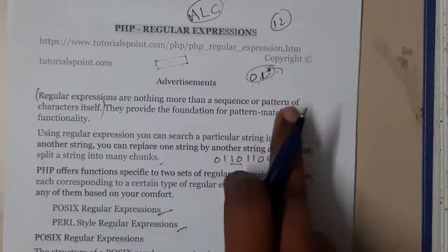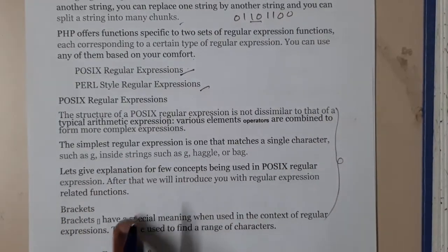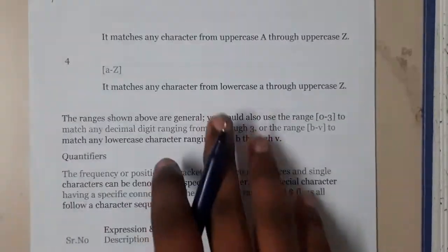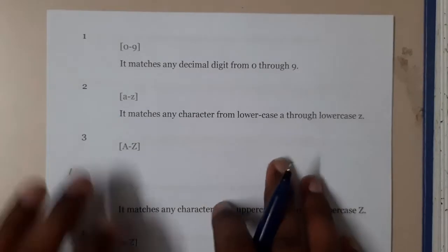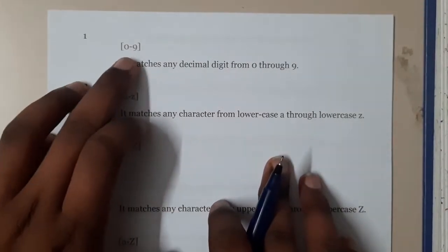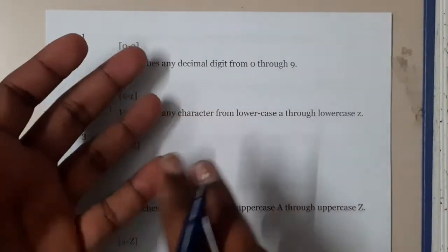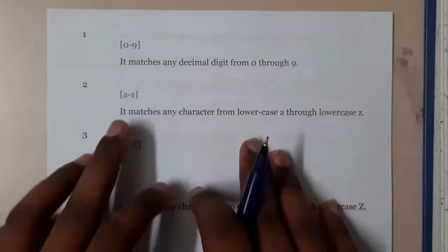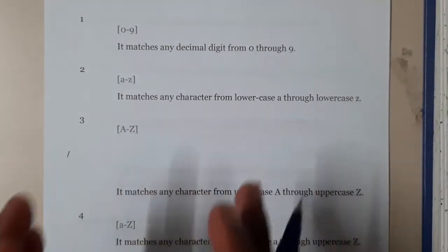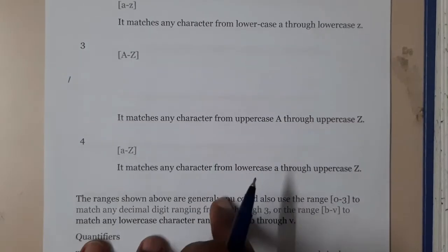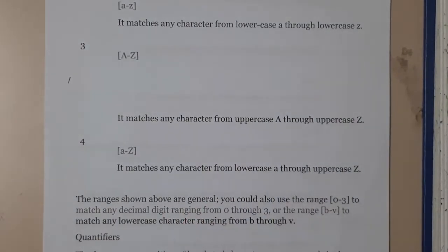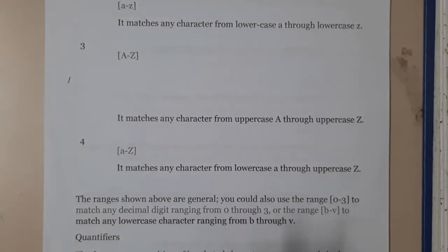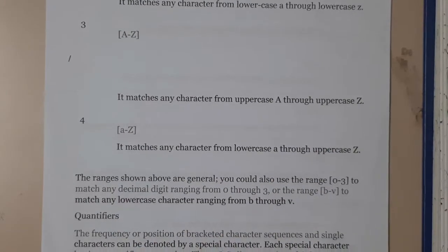It is simple to use. For example, 0 to 9 means the decimal digits 0 through 9. 'a to z' represents lowercase letters, and 'A to Z' represents uppercase letters. So we can say that we can select all letters from lowercase a to uppercase Z.